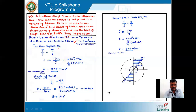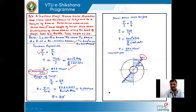To find the shear stress, we use the torsion equation T/J = τ/r, so τ = T × r / J. Here J = π/32 × (D⁴ − d⁴), with D = 80 mm and d = 60 mm. Substituting T = 6 × 10⁶ N·mm and r = 40 mm, we get the shear stress at the outermost fiber as 87.3 N/mm².